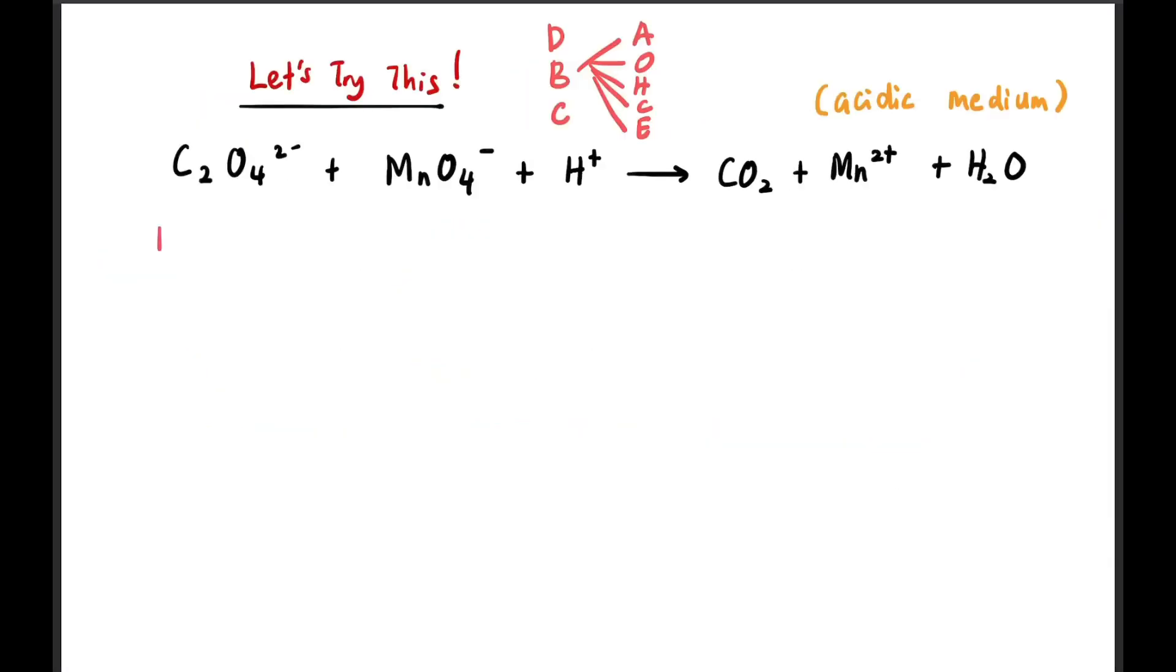Now let's try this question. So the first step is divide. C₂O₄²⁻ pairs with CO₂, MnO₄⁻ pairs with Mn²⁺. And then we have H⁺ and H₂O, so please ignore them because they will appear later at the end of the question. So first we have C₂O₄²⁻ to CO₂. So we balance the atoms first. Multiply by 2 there.